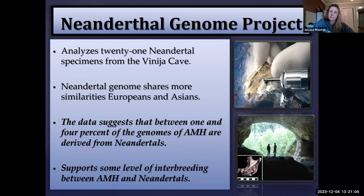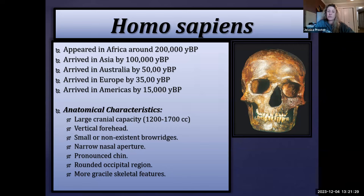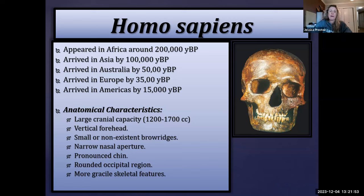Homo sapiens likely originated in Africa by no later than 200,000 years before present. There's some evidence suggesting possibly 300,000 years — a site in Morocco has anatomically modern Homo sapiens dating possibly that far back. They arrived in Asia by about 100,000 years ago, in Australia by about 50,000 years ago, in Europe by at least 40,000 years ago, and in the Americas by about 15,000 years before present.